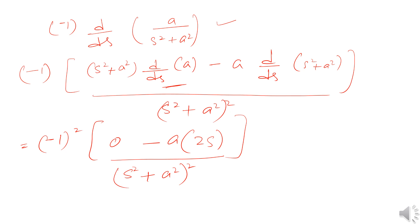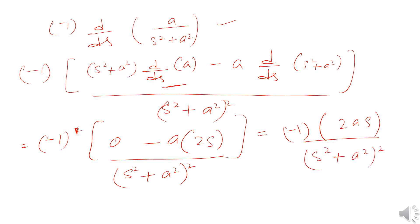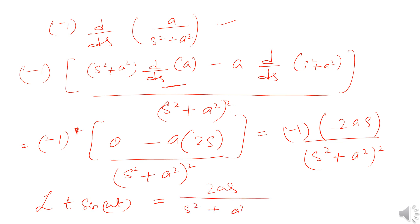The power here is 1, not squared — just to clarify. So multiplying by −1 gives us the final result: the Laplace transform of t·sin(at) equals 2as/(s² + a²)². This is the answer.